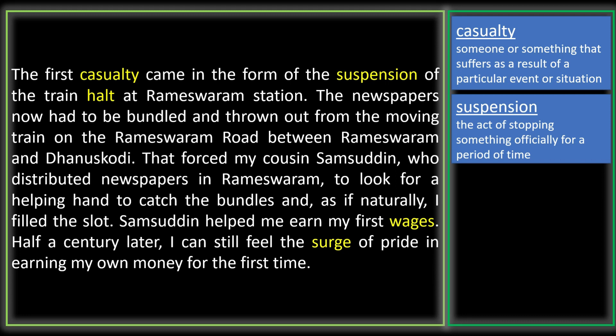The newspapers had to be bundled and thrown out from the running train on the Rameshwaram road between Rameshwaram and Dhanushkodi. Earlier the train would stop there and the newspapers would be taken from the train and distributed in Rameshwaram town. But now the train would not stop. That forced Abdul Kalam's cousin Samsuddin, who distributed newspapers in Rameshwaram, to look for a helping hand to catch the bundles. Samsuddin wanted somebody to help him catch the bundles thrown from the running train, and naturally Abdul Kalam helped, being a relative and cousin of Samsuddin.